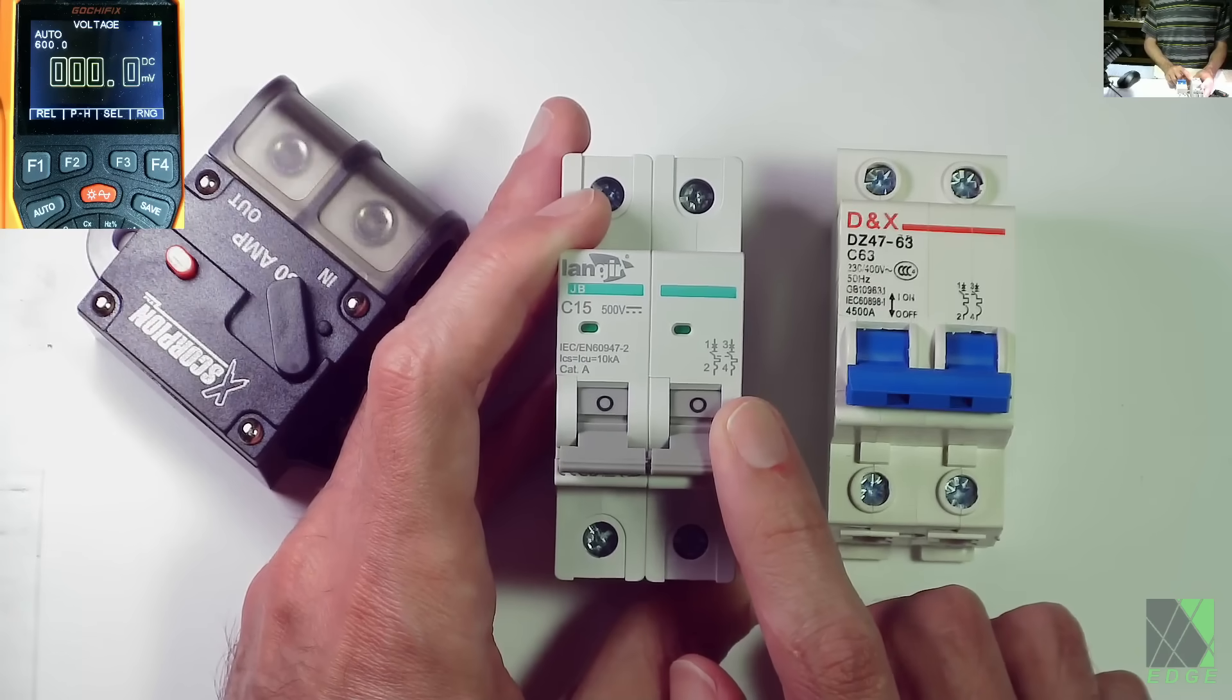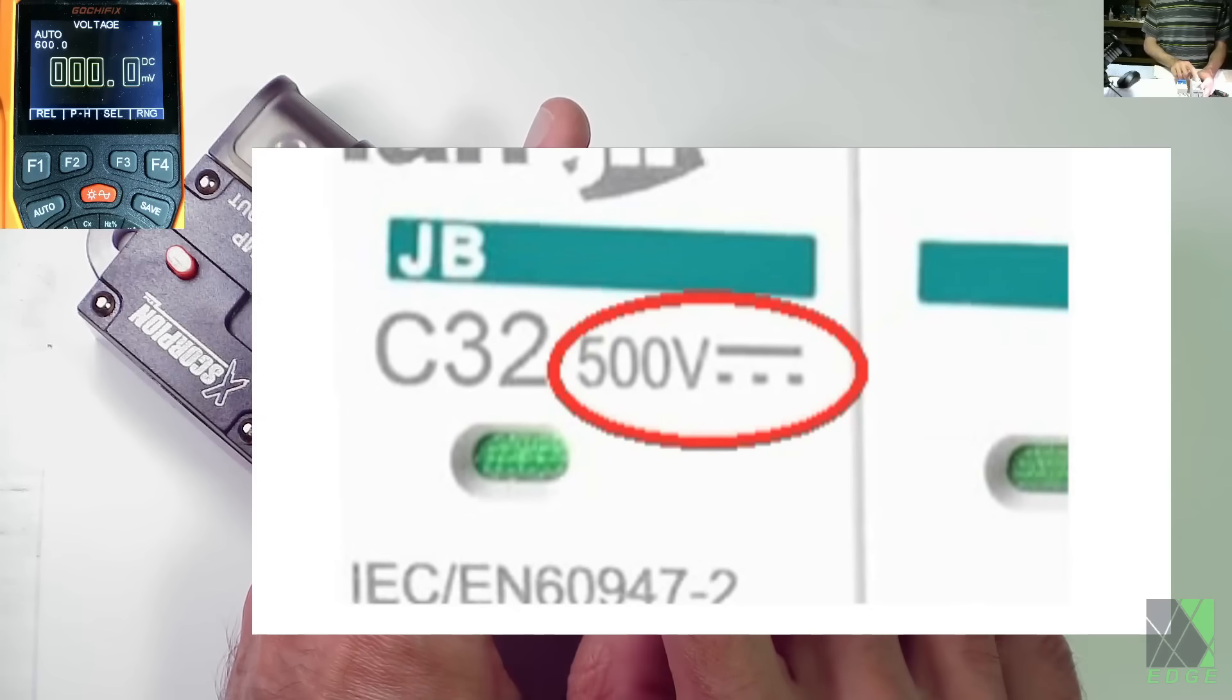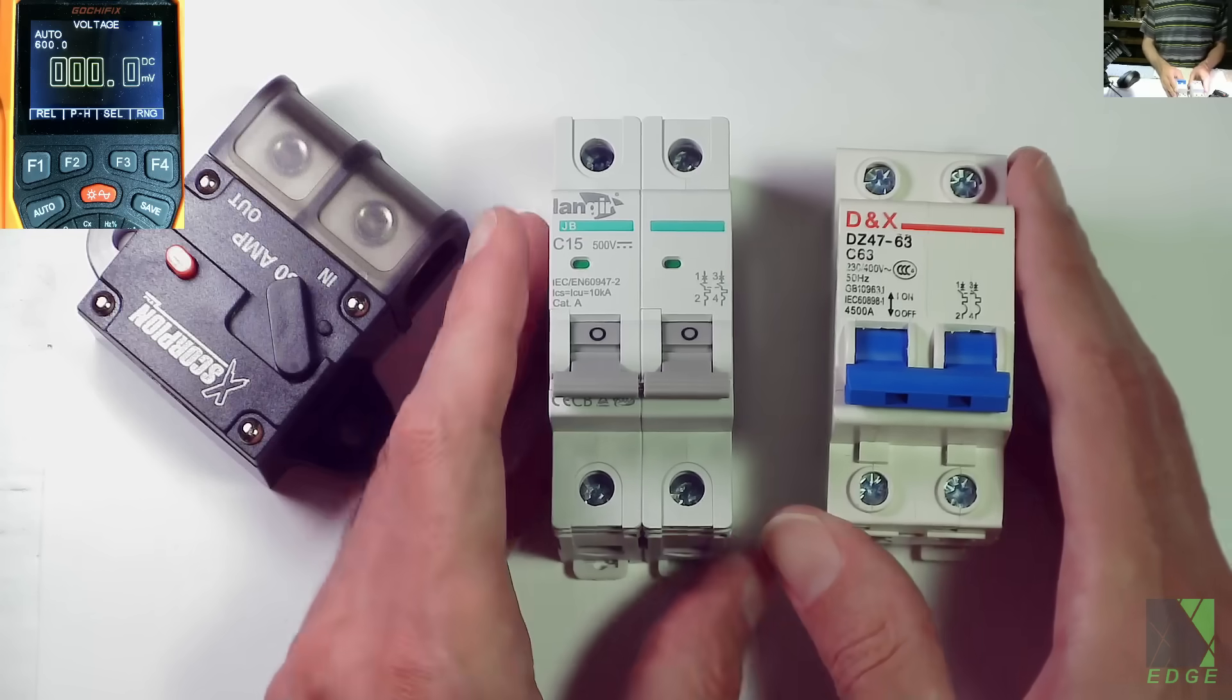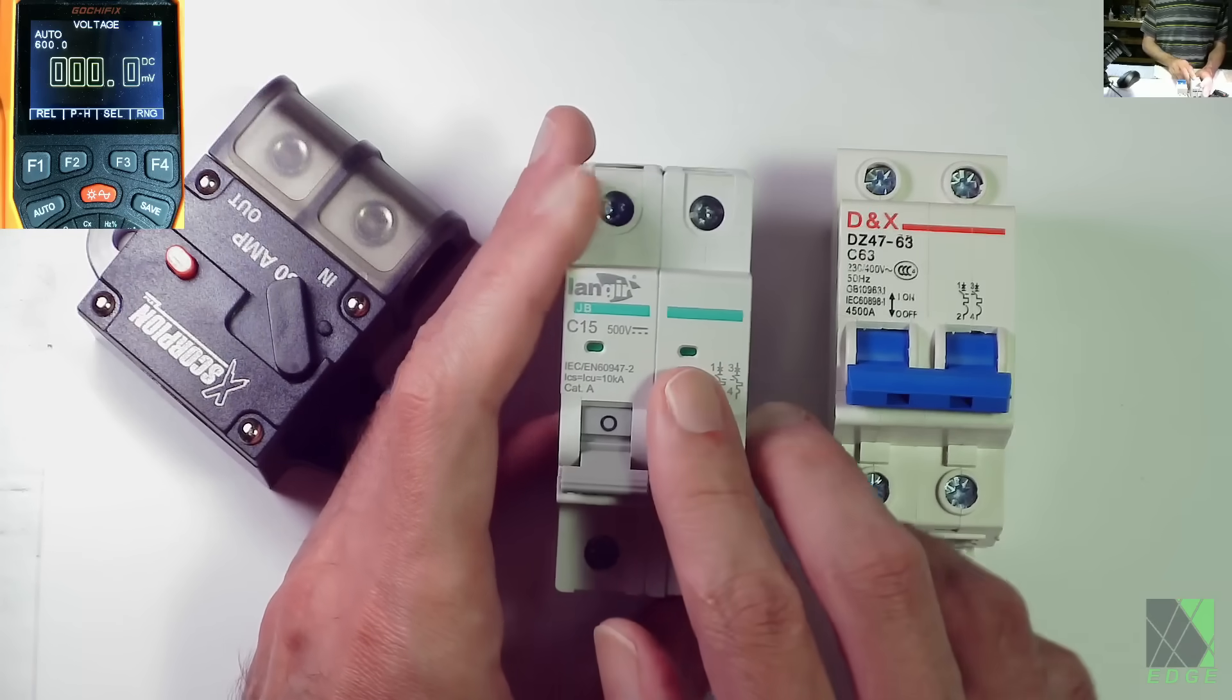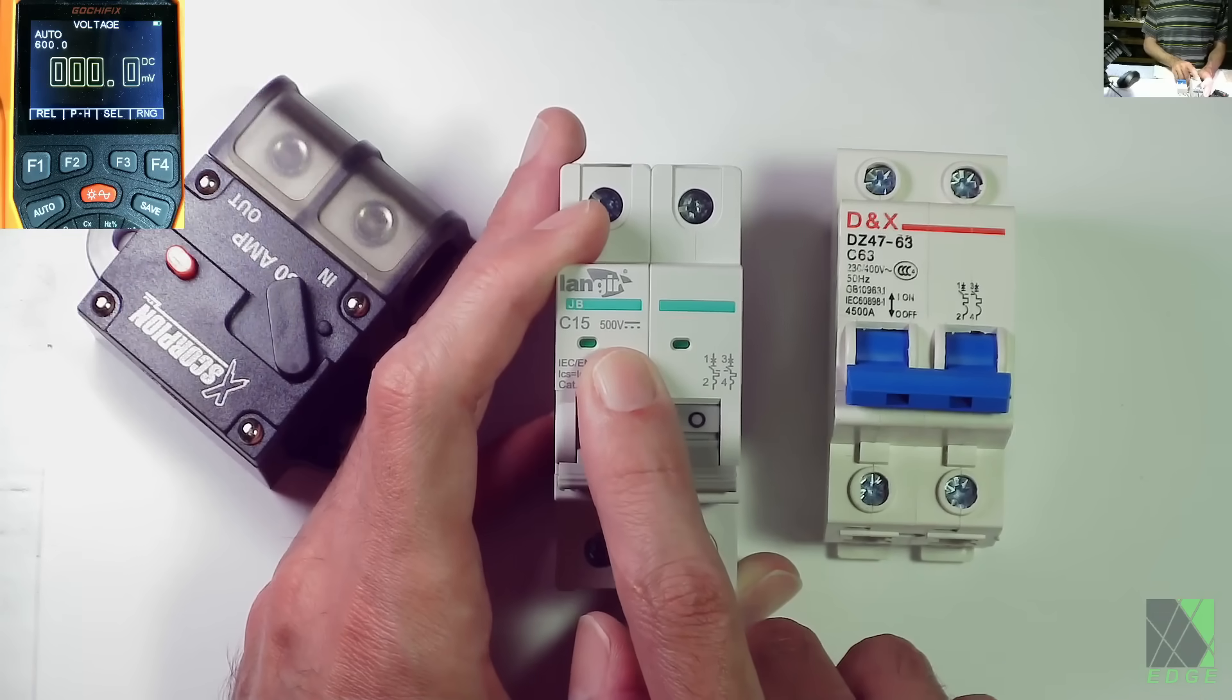This is a DC breaker and that can be recognized by this little symbol here which is a solid line on top of a dotted line. So why does it matter and why is it important to use a DC breaker for solar power installations?